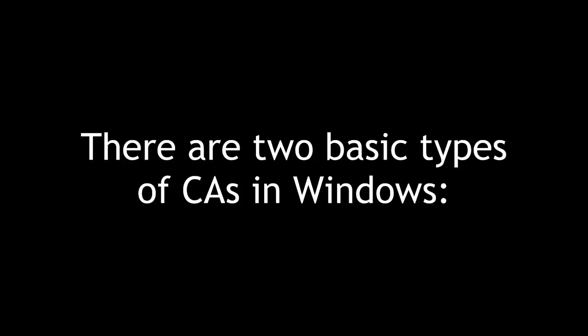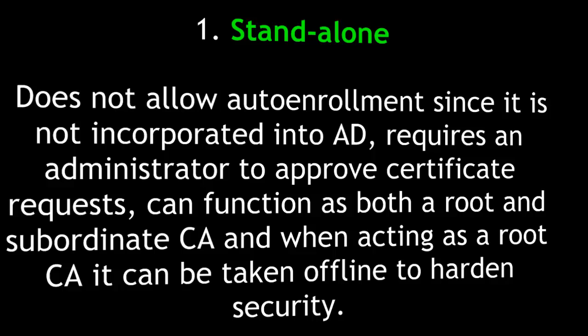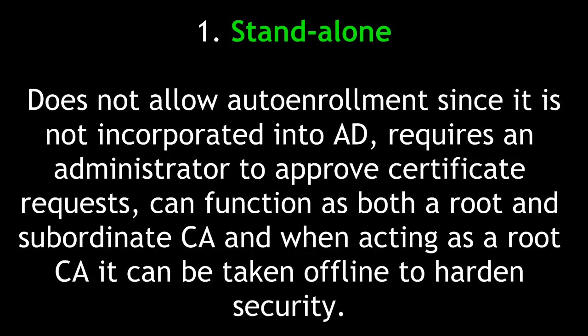There are two basic types of certificate authorities in Windows. The first type is Stand Alone. A Stand Alone certificate authority does not allow auto enrollment since it is not incorporated into Active Directory. It requires an administrator to approve certificate requests, can function as both a root and subordinate certificate authority, and when acting as a root CA, it can be taken offline to harden security.